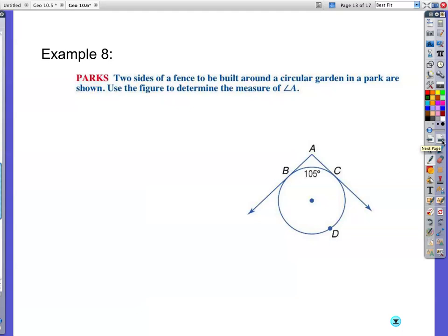Same kind of problem, but everything is a little different in this one. Two sides of a fence are going to be built around a circular garden in a park or shown. Use the figure to determine the measure of angle A. So I need to figure out this. I'm going to get you started. This part, around the circle. Isn't that 360 minus X? Oh, I'm sorry. Too much thought my brain is on the other problem yet. 360 minus 105. Isn't that what's left? There's 360. 105 has been used up. I want you to finish example number 8.